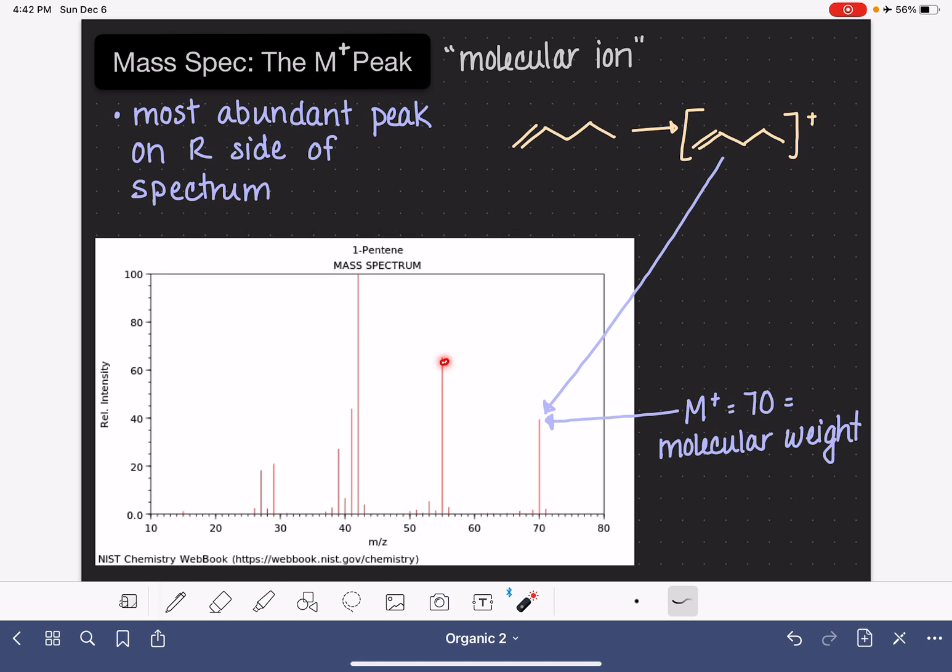The other peaks that we see in the mass spec are peaks that correspond to this 1-pentene cation falling apart into smaller fragments or smaller pieces. And those are the pieces that are getting detected here.